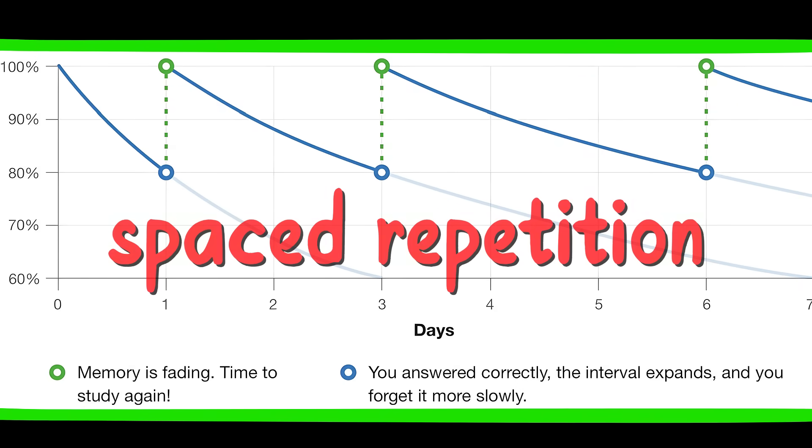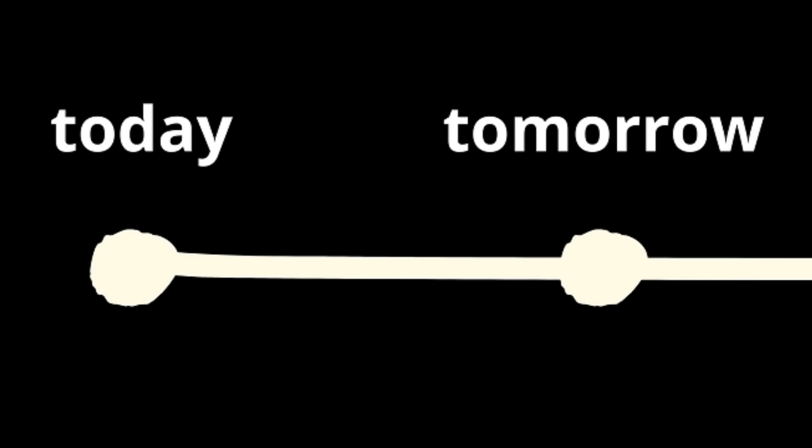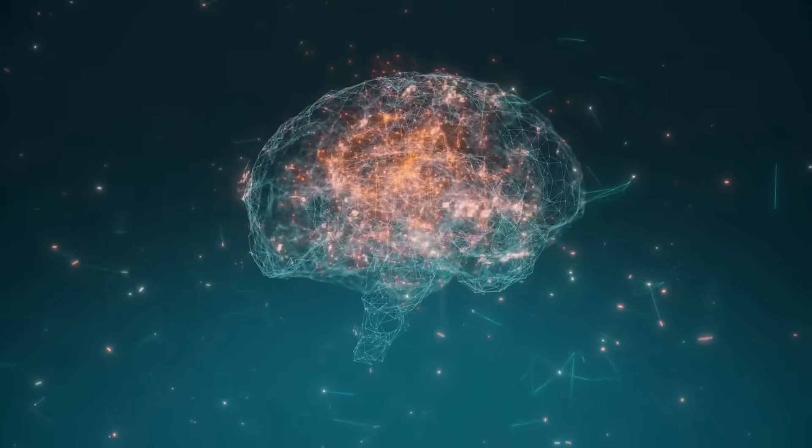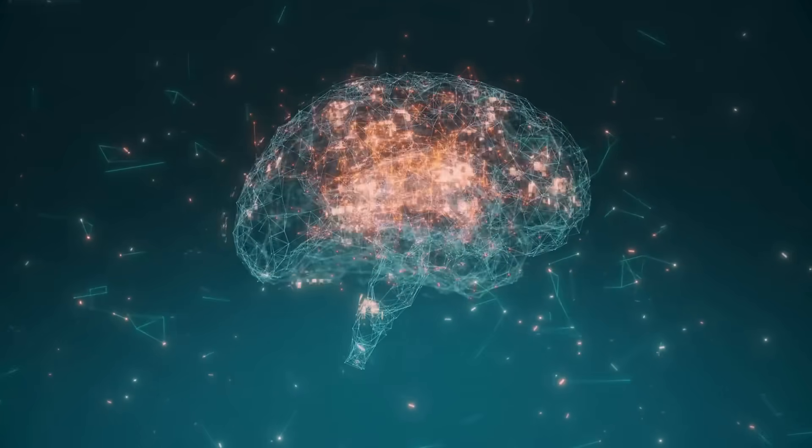What does work is spacing out your study sessions over time. This is called spaced repetition. For example, study today, review tomorrow, then again in three days, and again in a week. Each time you review, you strengthen the memory and move it into long-term storage.